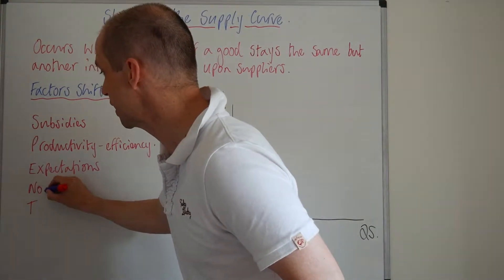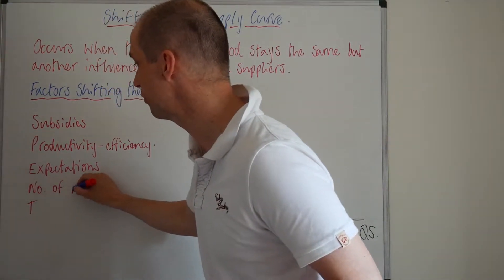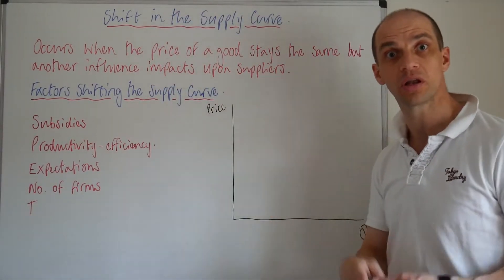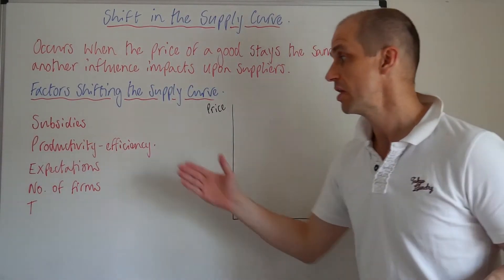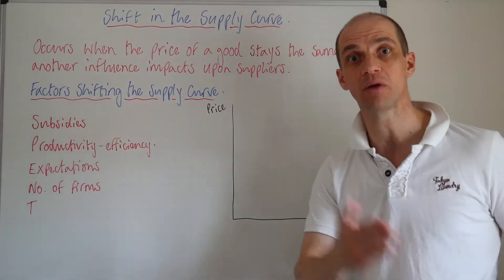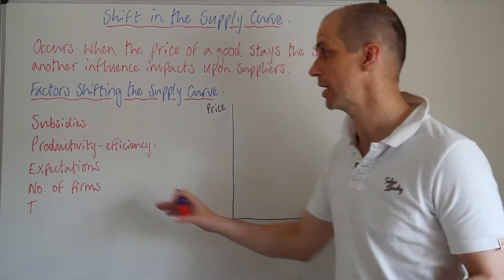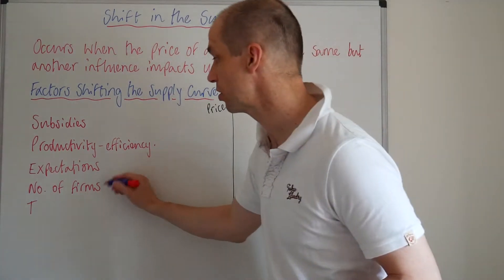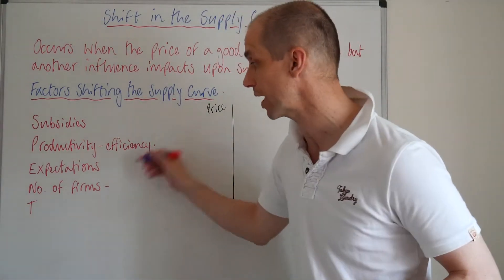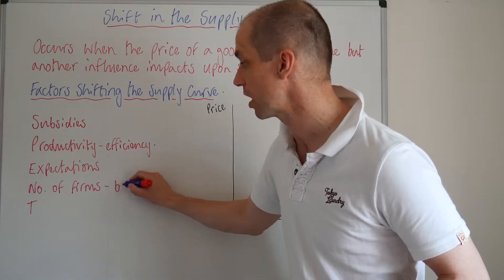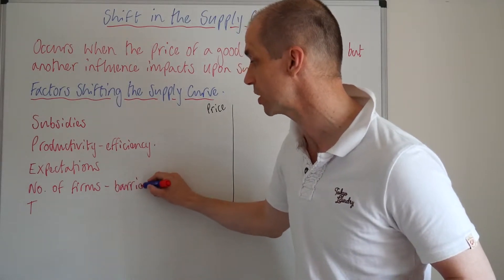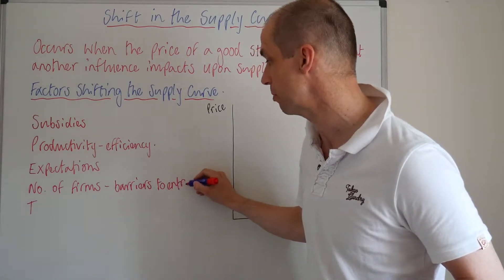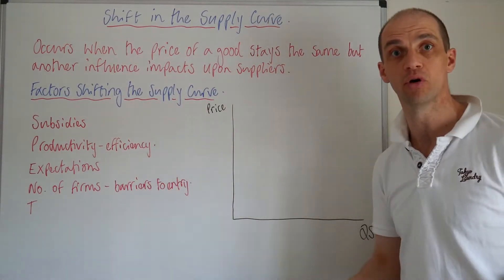Next up is the number of firms. If there's an increase in the number of firms that can actually provide the good, then of course the supply curve may well shift to the right and the quantity being supplied to the marketplace increases. This will be directly influenced by the levels of barriers to entry — so how difficult it is to actually enter that market and compete with existing firms.